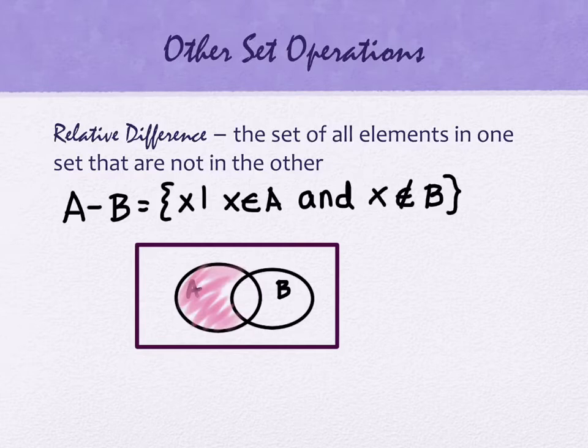Now, be real clear, it has to be in A. So don't go shading outside of circle A at all. That's not appropriate. It's got to be in A first and foremost, and then we remove the portion that it has in common with B. So we remove the intersection part of it is what really happens.